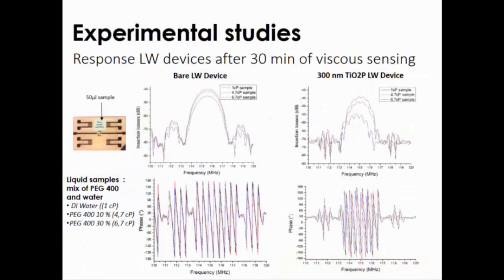Here, in order to see the difference between the perturbation between the waves, the Love waves and the liquids, we compare two devices: the bare device and a device with 300 nanometers with three different samples. We use a 50 microliter volume of samples. We can easily see here between this response and this response in the insertion losses that we have a higher perturbation of the waves due to the presence of the sensitive layer here. We can have this information too with the phase measurement of the device.